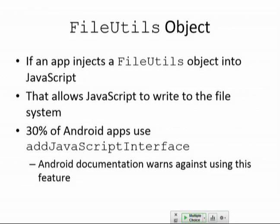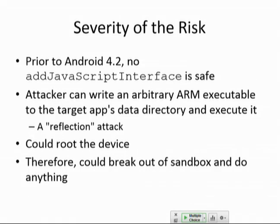This is what happened to Microsoft: in Windows 98 when they tried to integrate Internet Explorer with Windows Explorer, it became possible to refer to objects in the file system from the browser, and a bunch of attacks came from that. This is the same kind of thing — if the browser can browse local files in the system, you're asking for trouble. Prior to Android 4.2, none of them are safe. You could write an ARM executable and execute it in the app's data directory, potentially root the device through the browser, break out of the sandbox, and do anything.